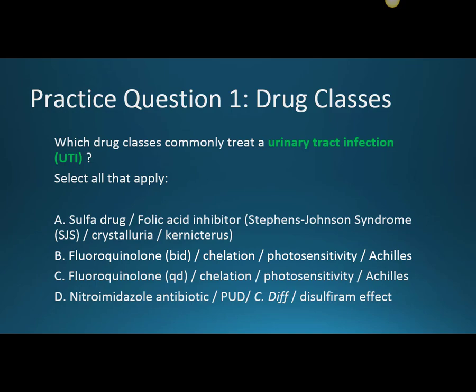Then the nitroimidazole metronidazole — it's an antiprotozoal — used for peptic ulcer disease, usually in quad therapy, and as a treatment for Clostridium difficile. And then there's that disulfiram effect, where somebody takes metronidazole and alcohol at the same time and can have severe nausea and vomiting, to the point of projectile vomiting.